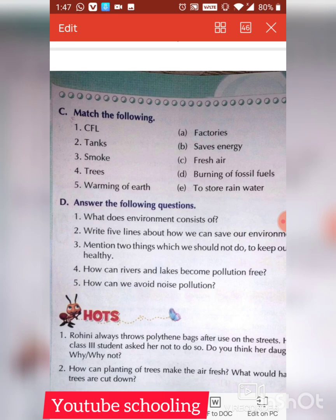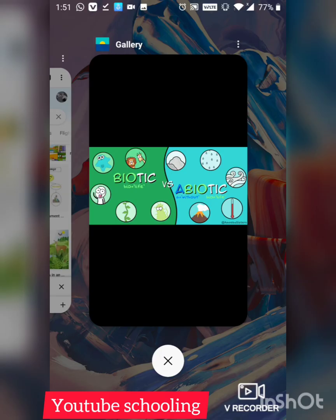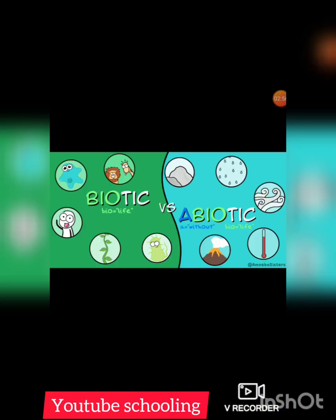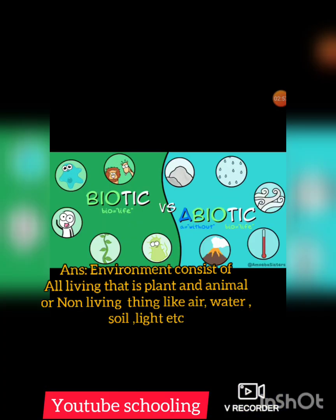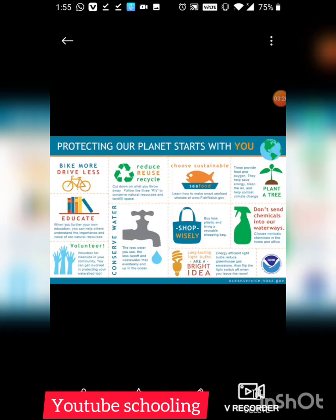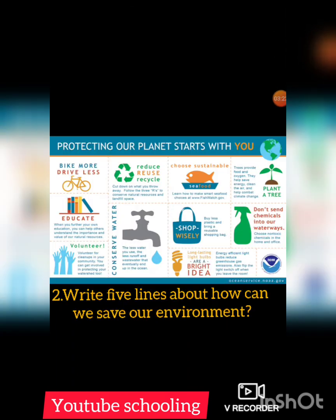Let's come forward to Question D: Answer the following questions. Question number one: what does the environment consist of? Answer: the environment consists of all the living things — that is plants and animals — and non-living things — that is air, water, light, soil, etc.